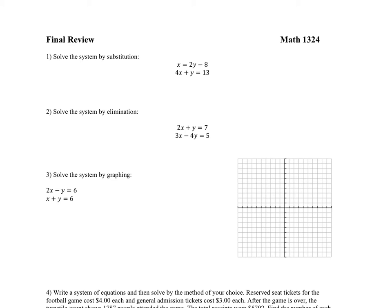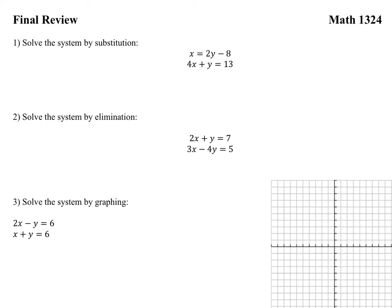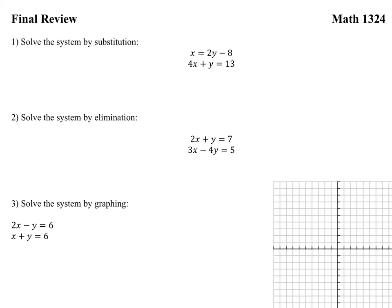This first part says solve the system by substitution. Remember when you substitute you always want to isolate a single variable. So your goal is to isolate one of these variables — isolate just means you want a single variable on one side. We already have it sitting here; that variable is isolated. So what we're going to do is take that and plug it in for the x in the bottom equation.